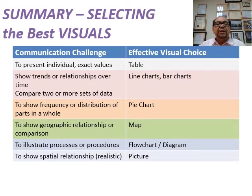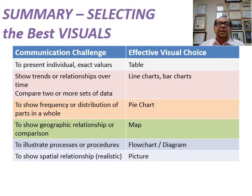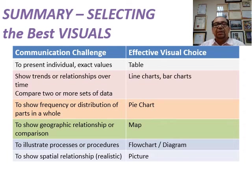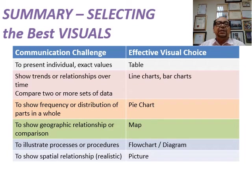Summary: selecting the best visual for your communication challenge. To present individual exact values, the best is to use a table. To show trends or relationships over time, use a line chart or bar chart. To compare two or more sets of data, also use line chart or bar chart. To show frequency or distribution of a part in a whole, use a pie chart. To show geographic relationships for comparison, use a map. To illustrate a process or procedure, use a flow chart or diagram. To show spatial or realistic relationships, use a picture.